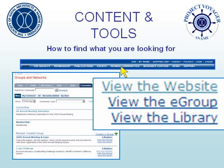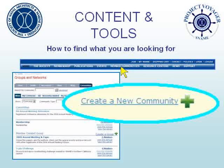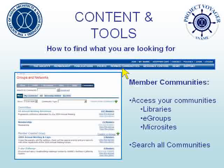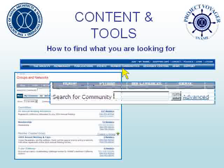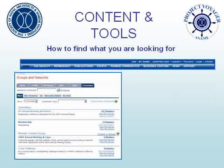You may wish to create a community for a specific interest — possibly to provide a forum for discussing a particular paper or a class at a university. Click on the Create a New Community link and invite contacts to your new group. There are literally dozens of Snami communities, and you can search them all through the Member Communities landing page. Type in part of a community's name in the Search for Community field to find it, or click Advanced to see a list of all communities.